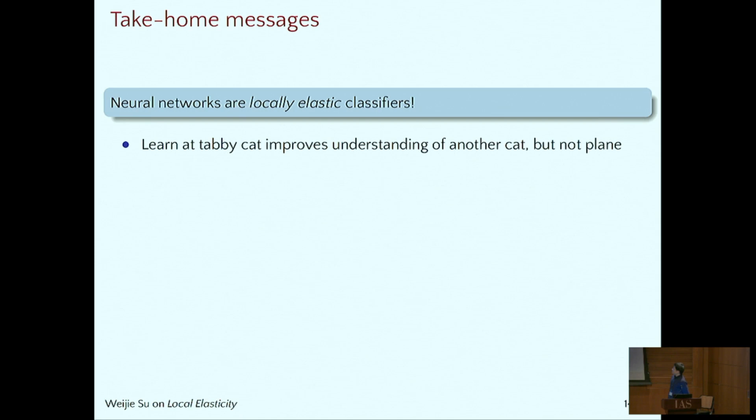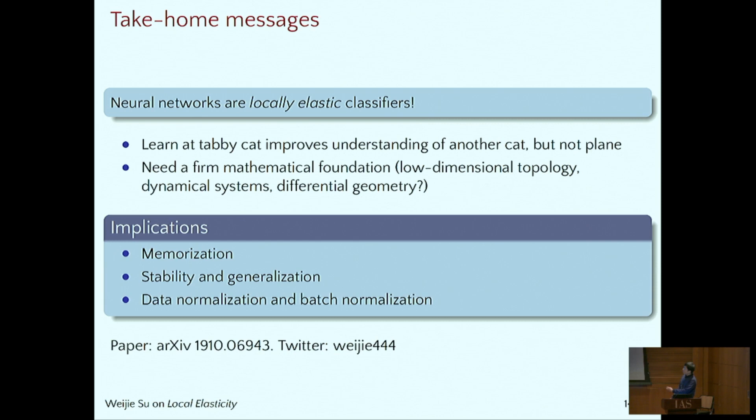Our slogan is that neural networks are locally elastic, and learning tabby cat can improve my understanding at another cat, but not something far away. But with just no mathematical foundation, can we develop it? I tried very hard, no progress yet. I believe that we probably need some tools, advanced tools from low dimensional topology, dynamical systems, and differential geometry, to make it a solid foundation for it. In the paper we provide some implications of the local elasticity on memorization, stability, and the data normalization. Please take a look at our paper. Thanks.